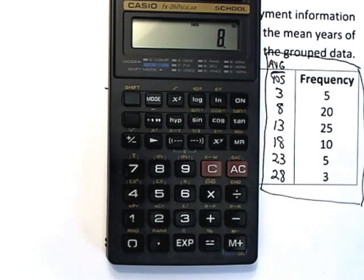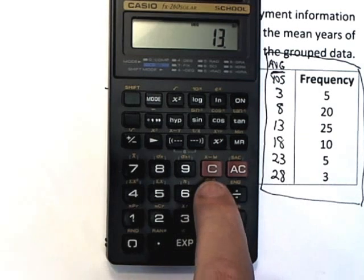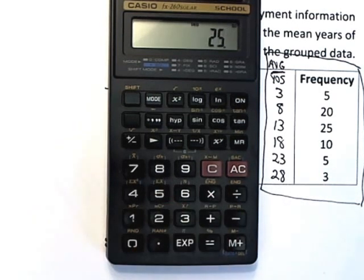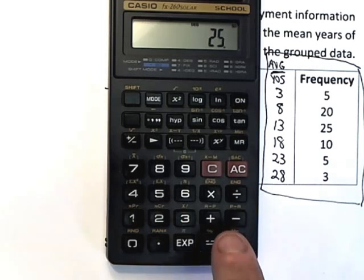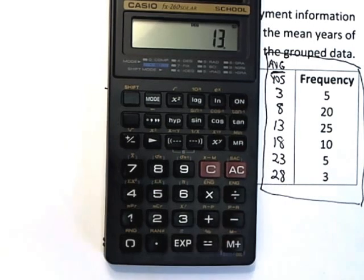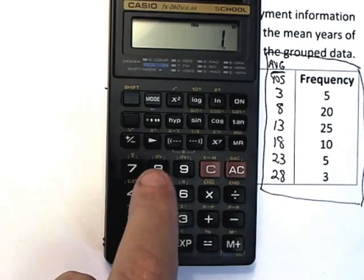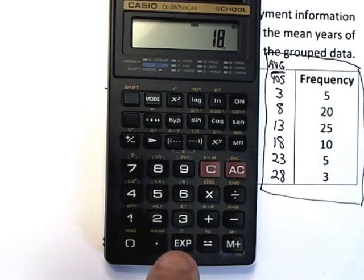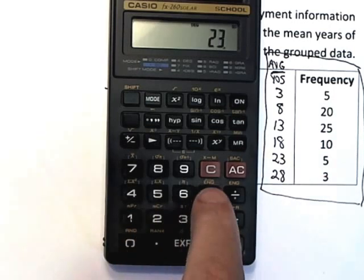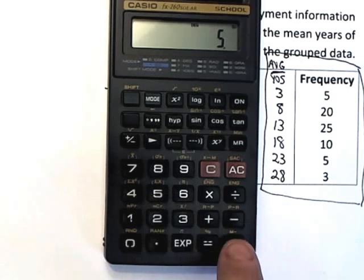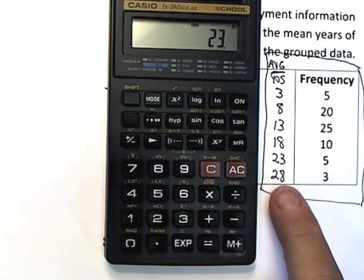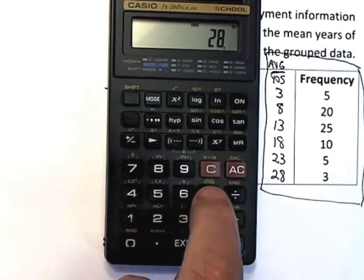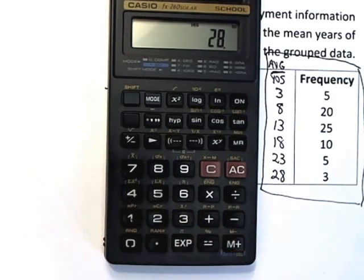Then I do thirteen and enter it twenty-five times: I hit thirteen, then times twenty-five, then M+ — and thirteen is inserted twenty-five times automatically. Then I do the same thing for eighteen: times ten, hit M+, and eighteen goes in there ten times. Then twenty-three times five, hit M+, and twenty-three is in there five times. And last but not least, twenty-eight times three, hit M+, and it puts twenty-eight in there three times. That should be done.